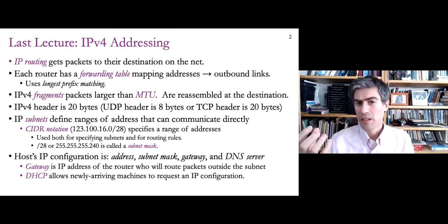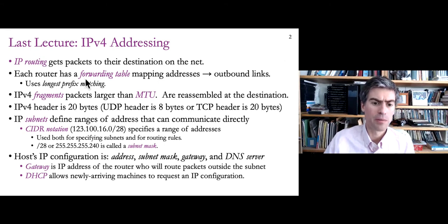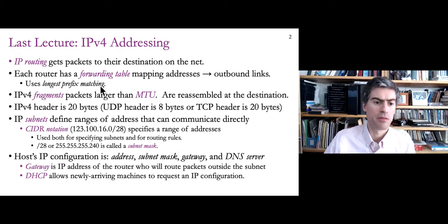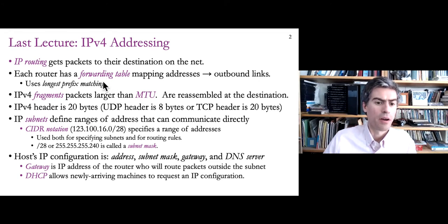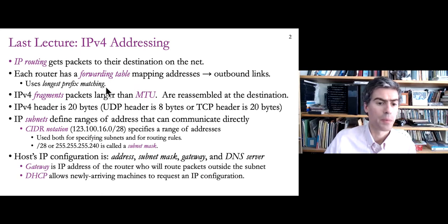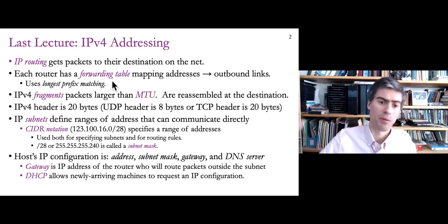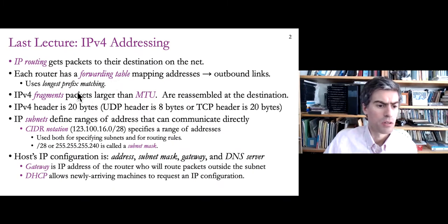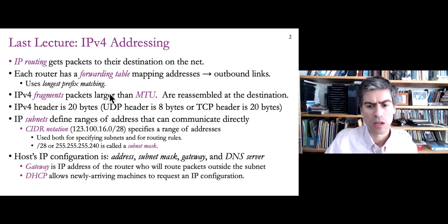Mechanically speaking, every router has a forwarding table that maps between ranges of addresses and particular outbound links, because every router has a set of links it can choose from to send packets in different directions. We'll talk later about how forwarding tables are determined. Those forwarding tables use the longest prefix matching to allow multiple rules to potentially match an address, but then use the most specific one to determine the outbound link.